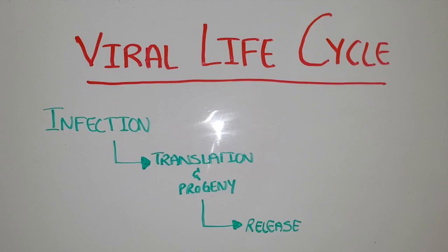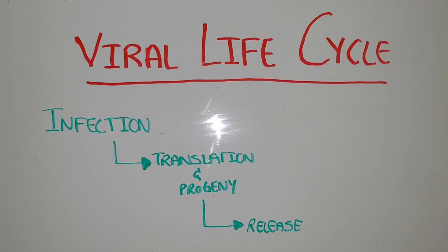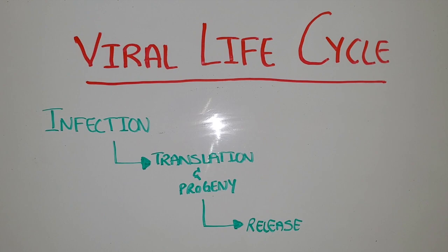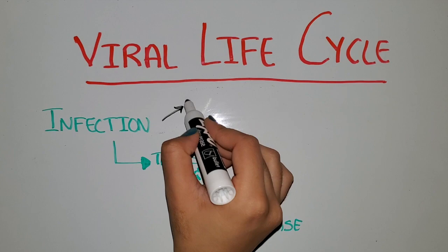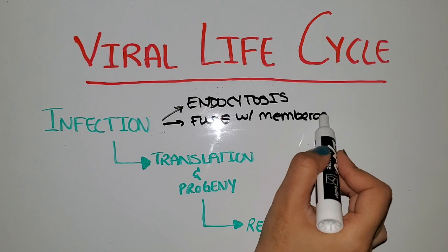The last topic is the viral life cycle, which has three steps. First, infection — entering the host. Second, translation and progeny — creating copies. Third, releasing the progeny. For the first step, the most important thing is that viruses have proteins that recognize receptors on host cells. If the virus cannot recognize these receptors, the host cell is almost invisible to it. The virus then enters through endocytosis, fusing with the plasma membrane, or by injecting its genetic material directly — as bacteriophages do.